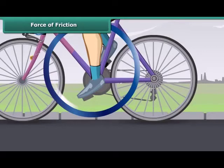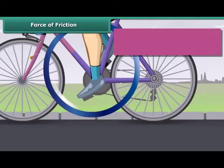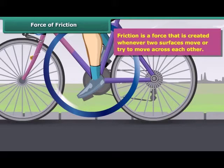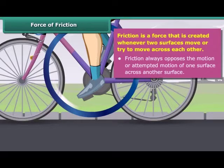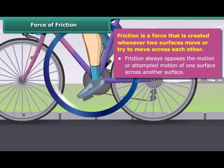This actually happens because of friction. Friction is a force that is created whenever two surfaces move or try to move across each other. Friction always opposes the motion or attempted motion of one surface across another surface. The force which resists the motion of a body while moving on a surface is called friction.